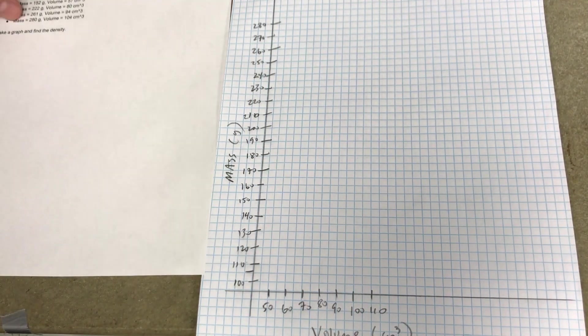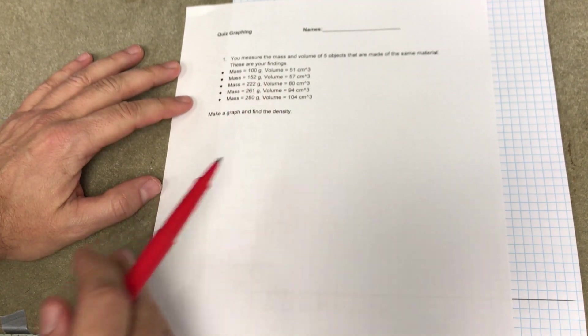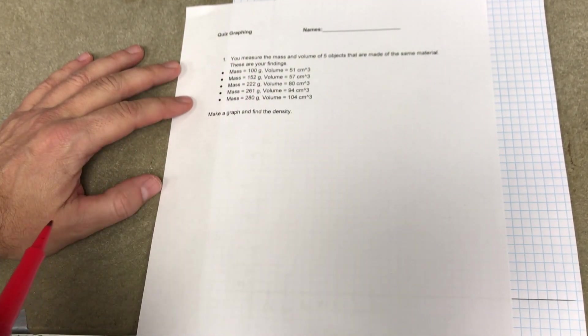Okay, so let's go over this problem. So I gave you this. These are the masses and volumes for different objects of the same material. And we want to find the density.